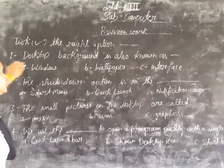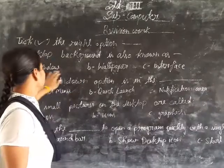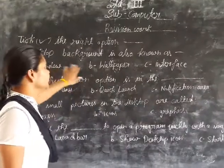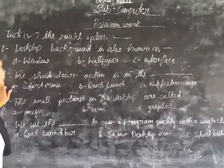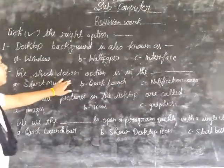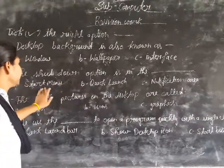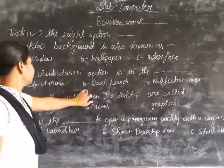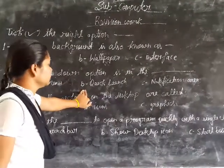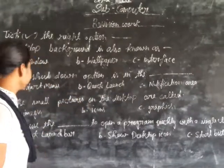First, desktop background is also known as: option A window, B wallpaper, C interface. And second, the shutdown option is in option A start menu, B quick launch, C notification area.